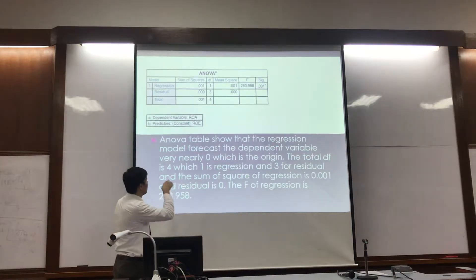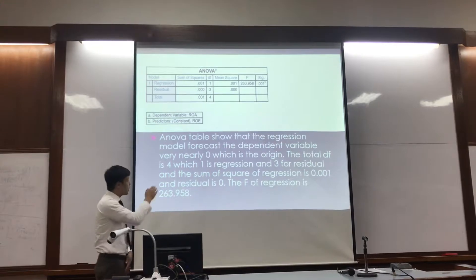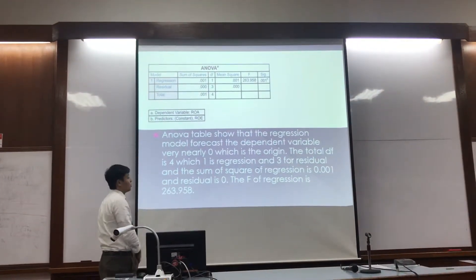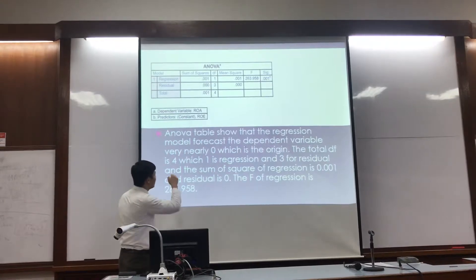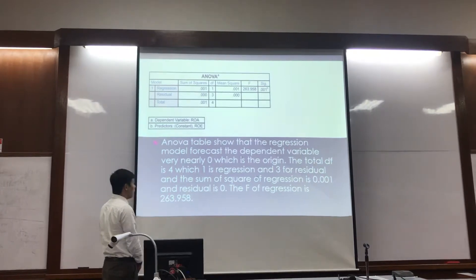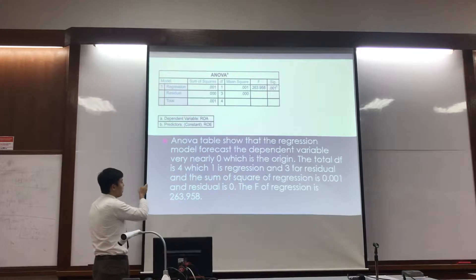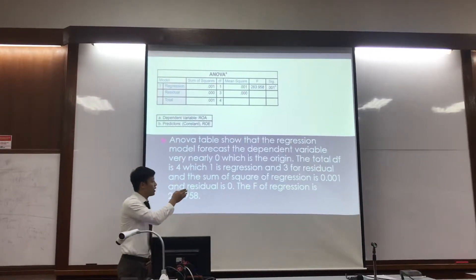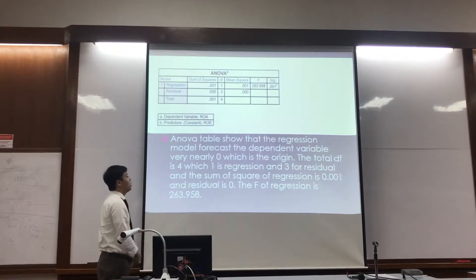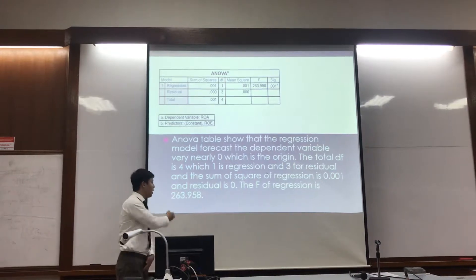The last picture shows about this one. The table shows that the relationship model for the diffraction with the table is nearly 0, which is orange. The total difference is 4. The relation is 3, and the sum of the spreading of the relationship is 2,001, and the relation is 0. The A-code relationship is 2.6 or 2.63 at 1,958.